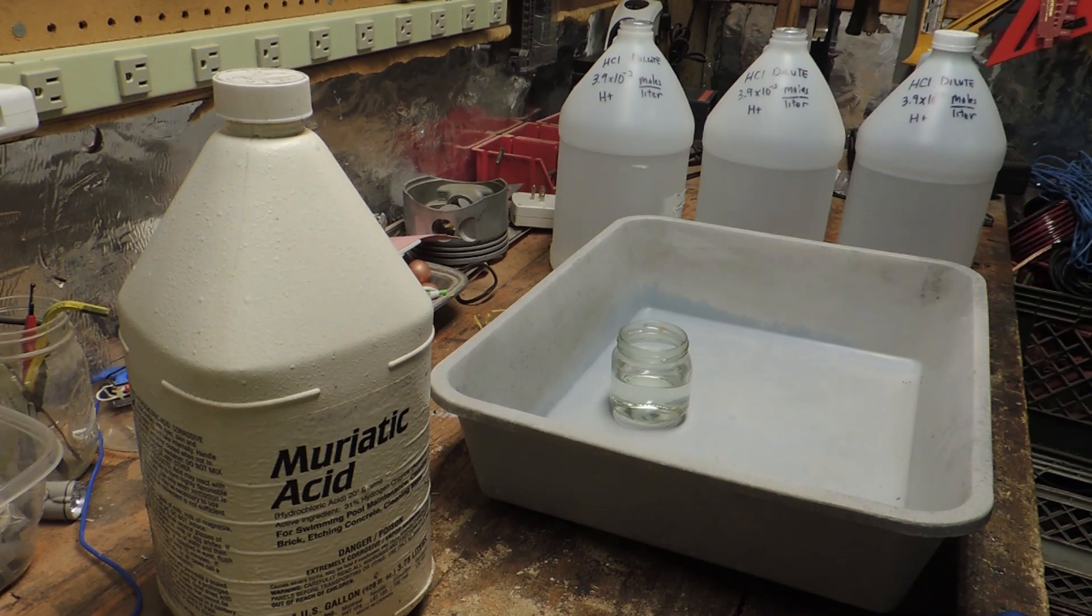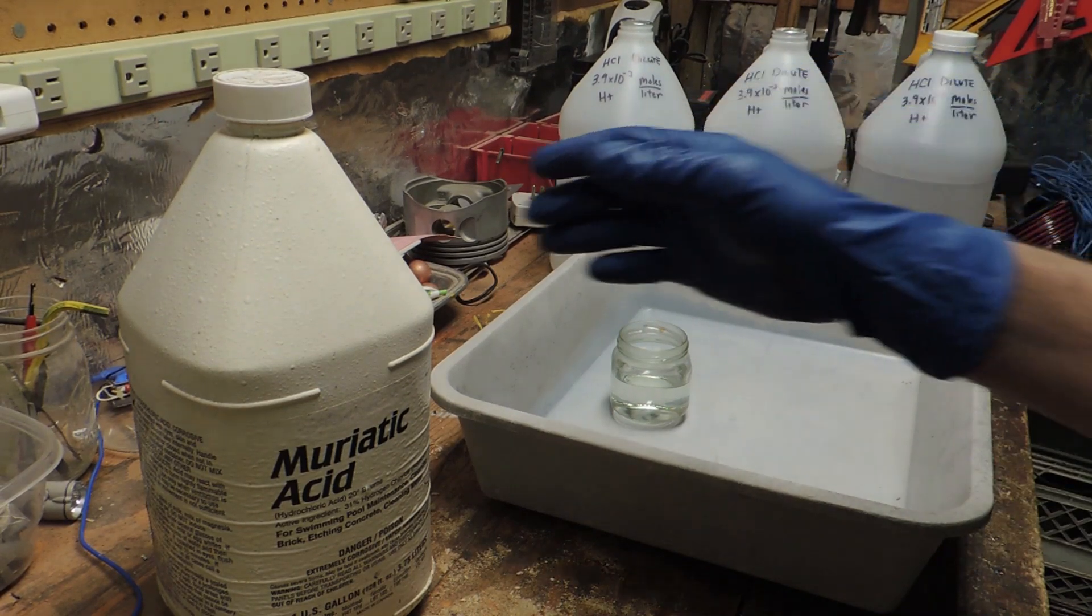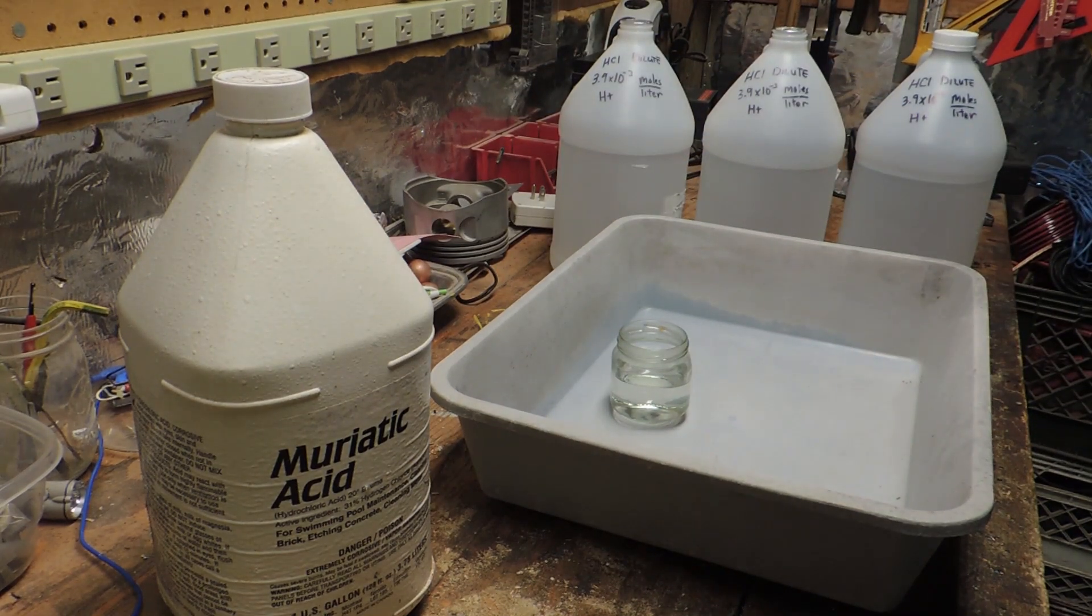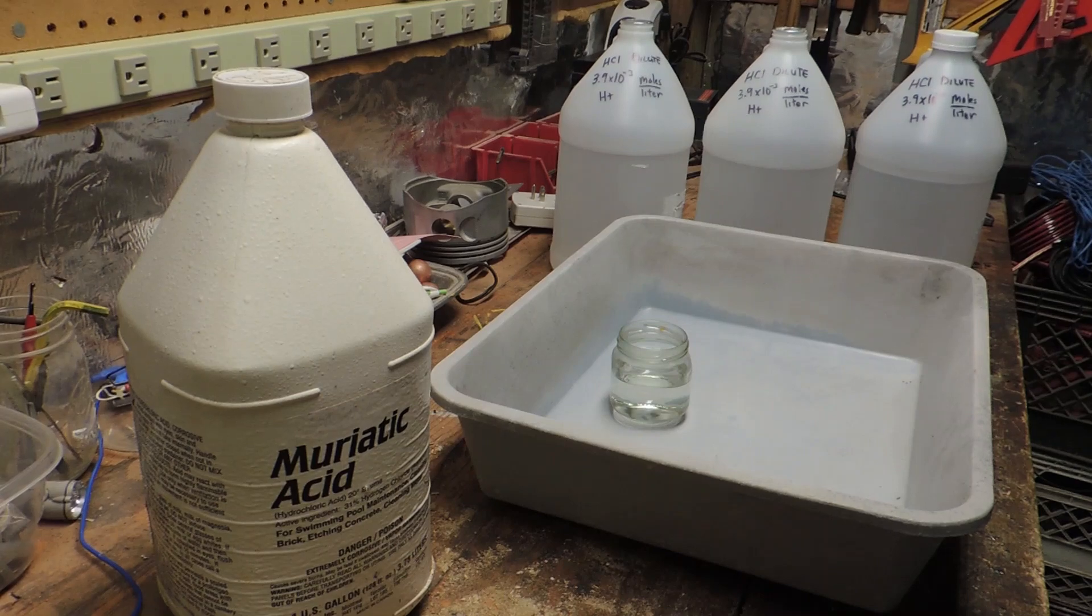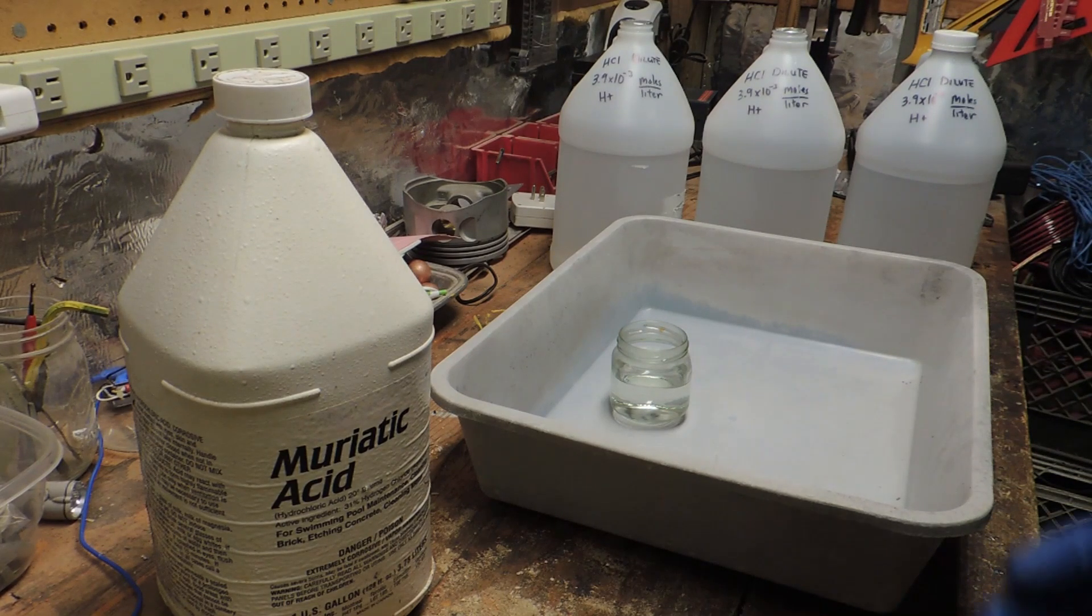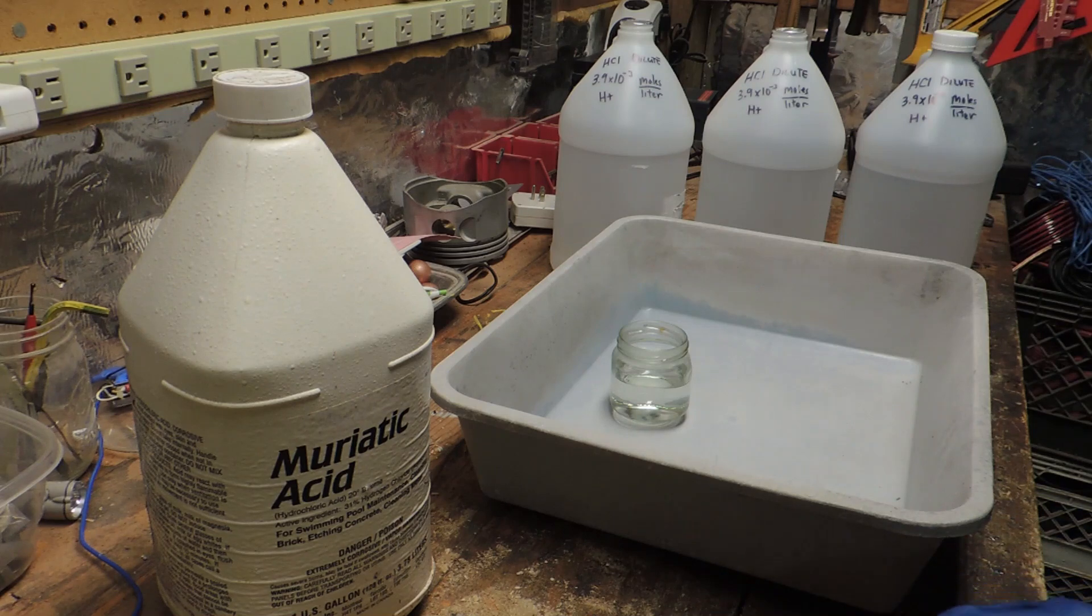So I asked myself is there a way to take muriatic acid and then dilute it down to the same concentration as vinegar and the answer is yes you can it just takes a little bit of calculation which I did at the end of this video if you're interested you can fast forward to that point.